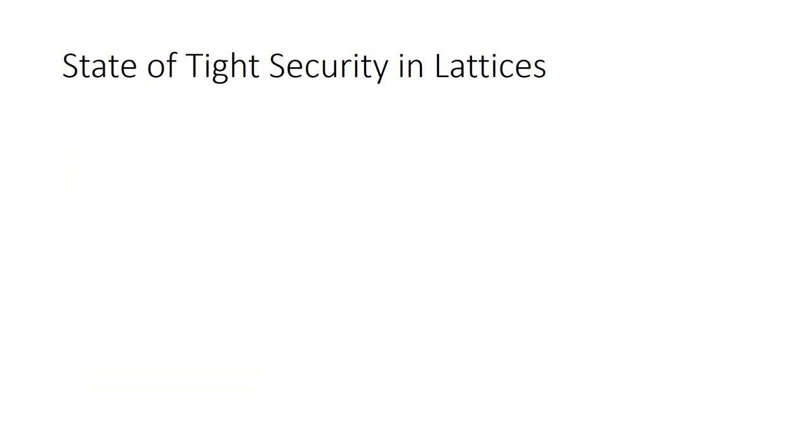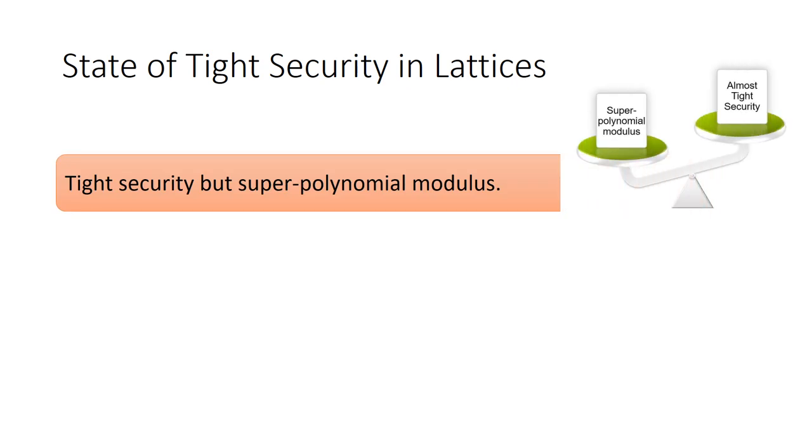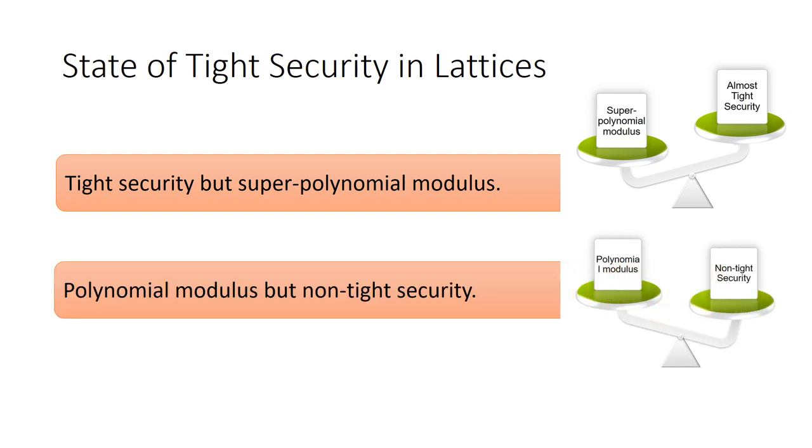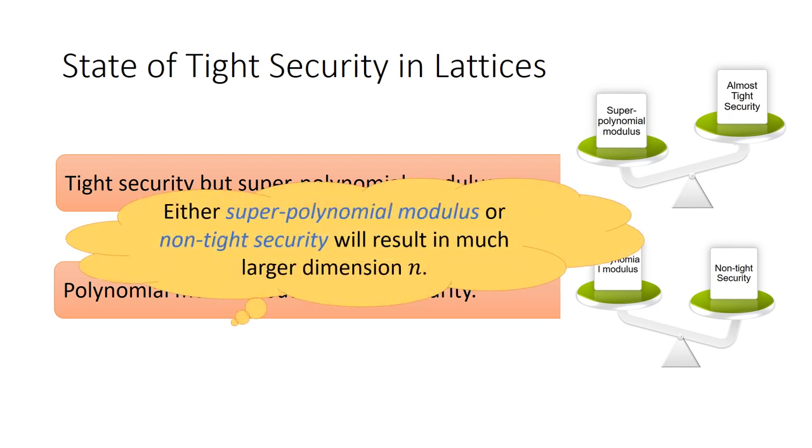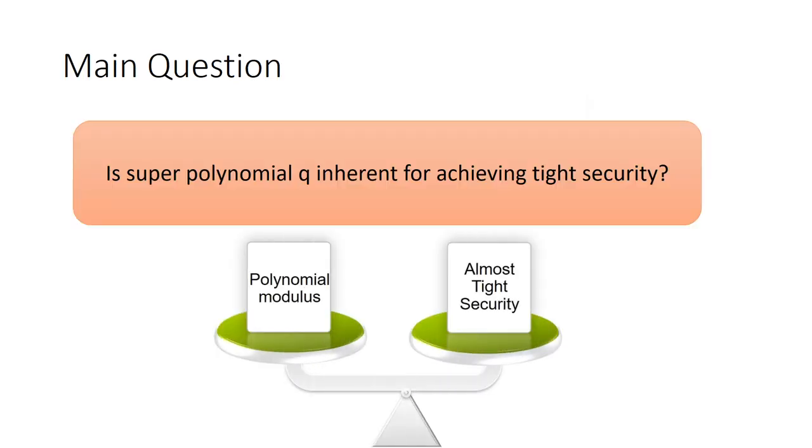From above all, we notice that for tight security in lattices, some work are essentially almost tight but with super-polynomial moduli. Other work can work with polynomial moduli but just have non-tight security. In fact, either super-polynomial moduli or non-tight security will result in much larger dimension n. This is clearly a negative factor for efficiency. Therefore, we ask, is super-polynomial q inherent for achieving tight security?